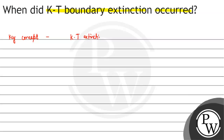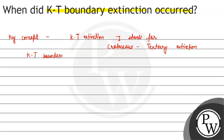KT extinction — what was it? It stands for Cretaceous — that is K — and T is Tertiary. So KT stands for Cretaceous-Tertiary boundary extinction.